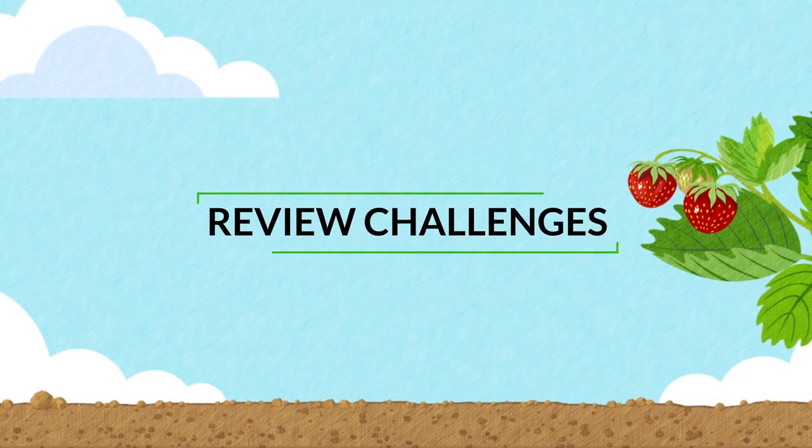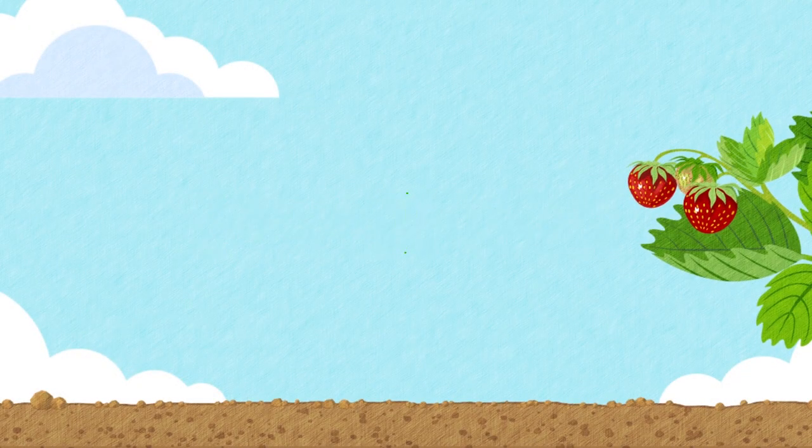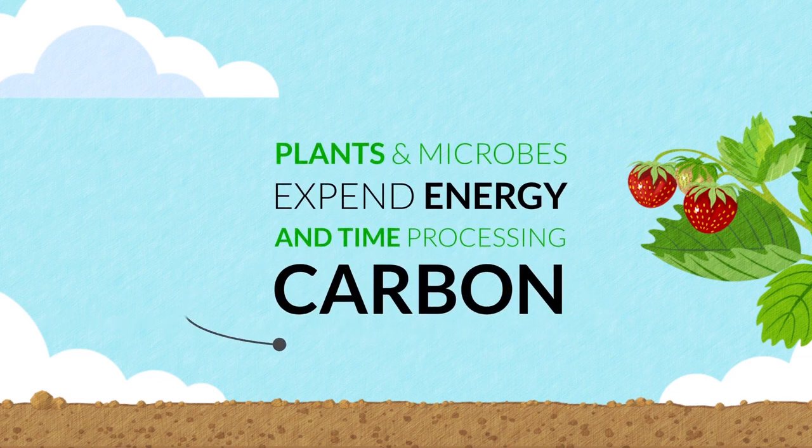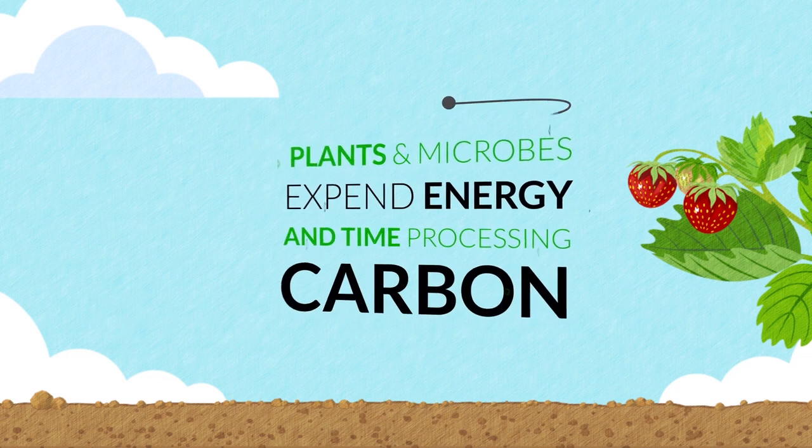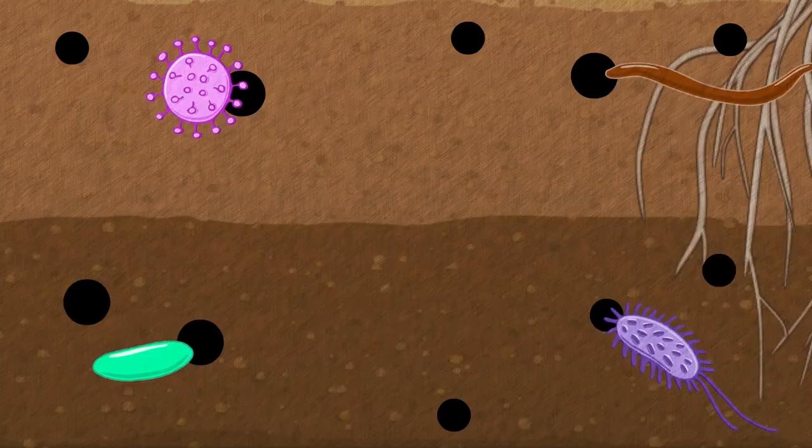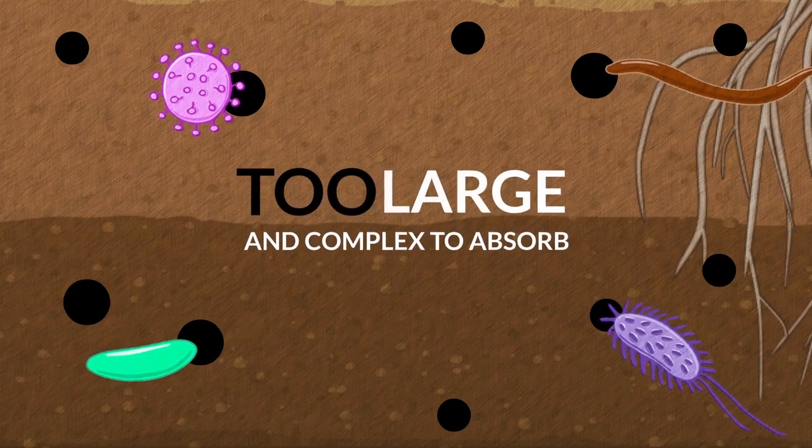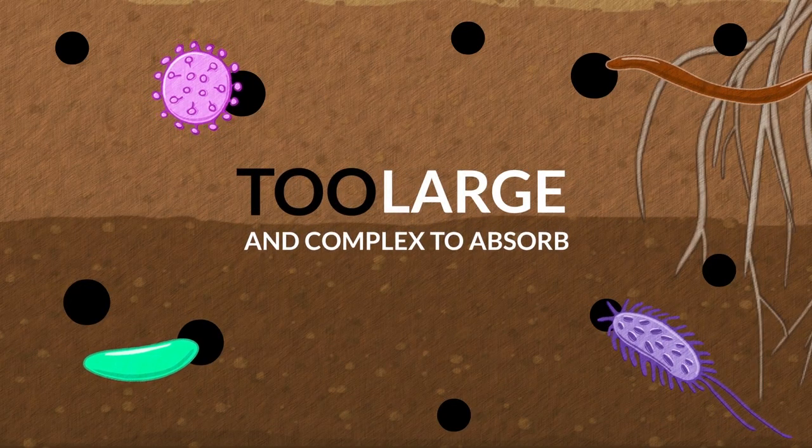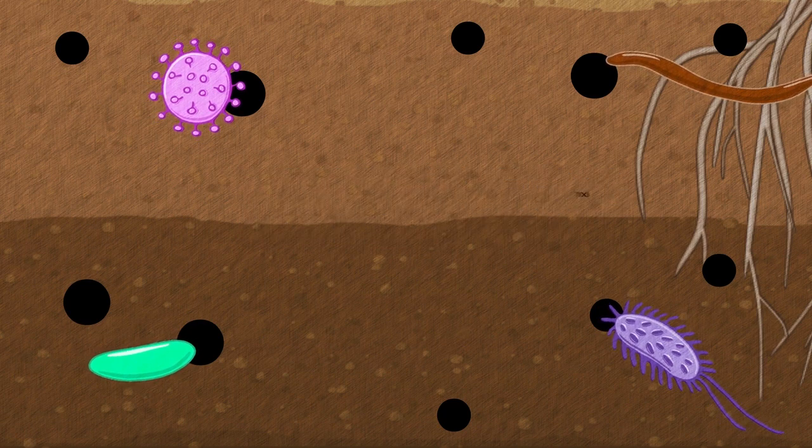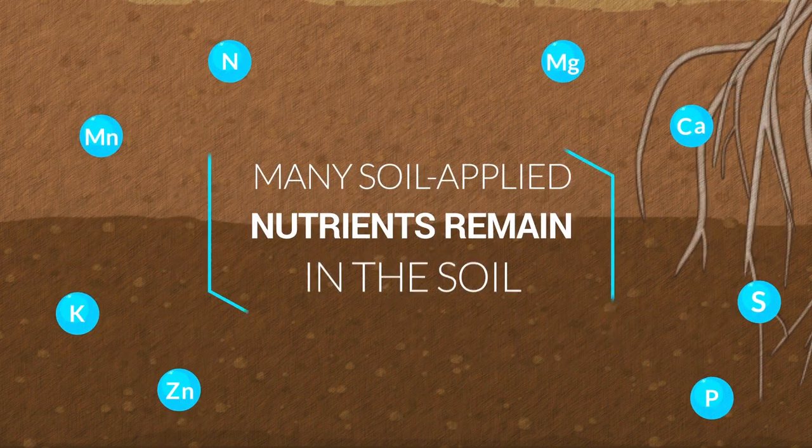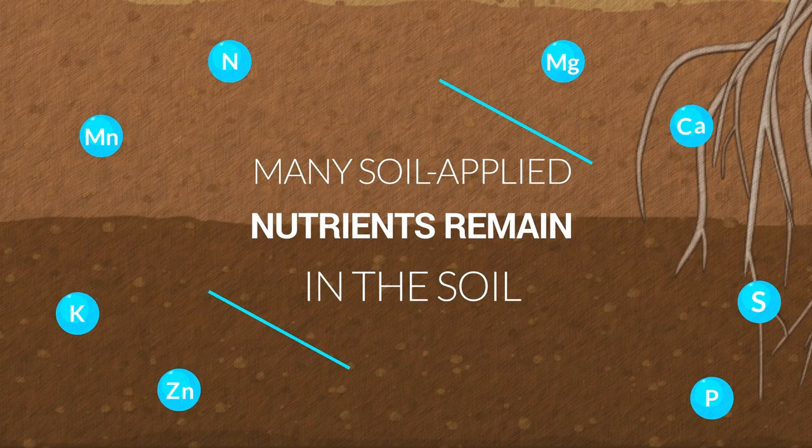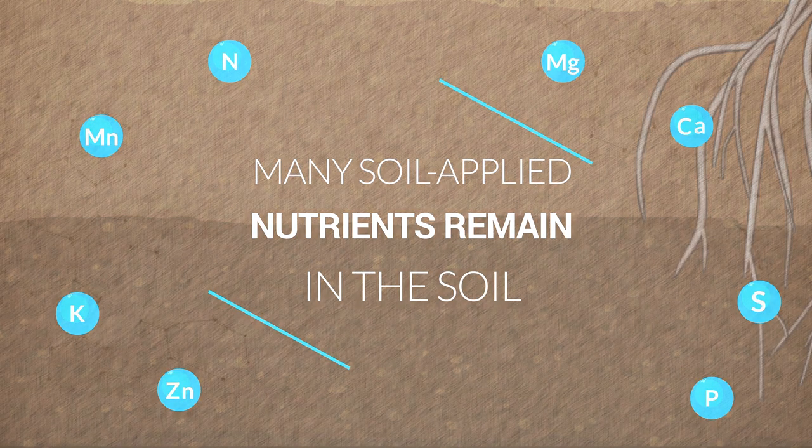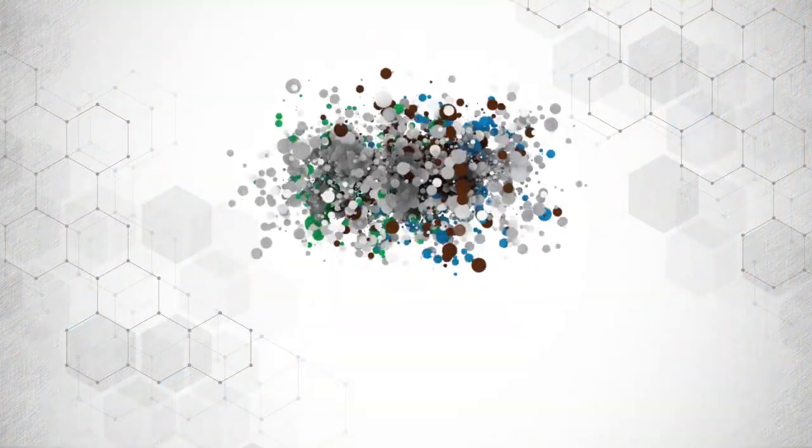So let's review some of the challenges we've discussed so far. Number one, plants and microbes expend a great deal of energy and time processing carbon. Number two, most natural forms of carbon are too large and complex for easy absorption. Number three, many soil-applied nutrients are not effectively taken up into the plant or remain tied up in the soil. There is a solution.